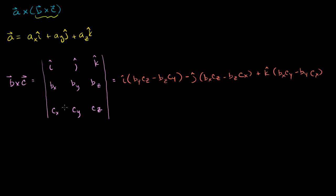We just took the cross product of b and c, and now we need to take the cross product of that result with a. Instead of rewriting the vector, let me set up another matrix: i, j, k in the top row, then a's components ax, ay, az in the second row, and the result of b cross c in the third row.